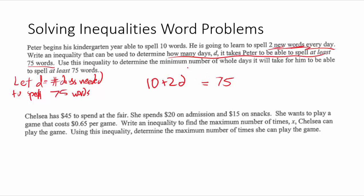Now let's fix that equal sign because we want an inequality. The left side represents the words Peter can spell; the right side is our limiting factor. The problem says he needs to spell at least 75 words, so the amount Peter can spell has to be greater than or equal to 75. He could have exactly 75 or more words spelled and he's okay. So our inequality is: 10 + 2D ≥ 75.